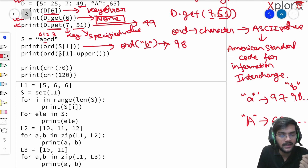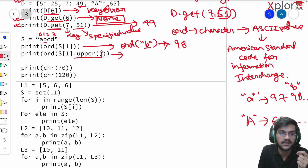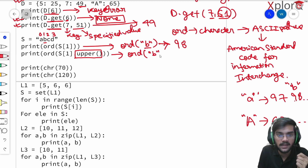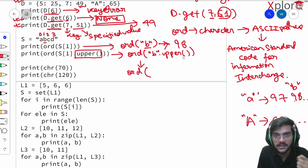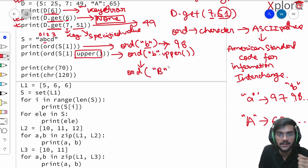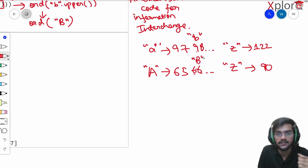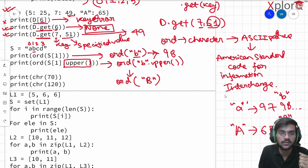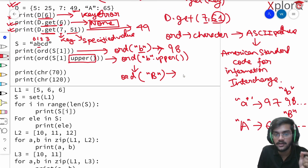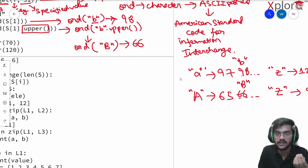Now print ord(S[1].upper()). S[1] is 'b', and dot-upper converts the character to uppercase — so it becomes 'B'. Capital 'A' is at 65, so capital 'B' is at 66. Therefore ord('B') is 66.